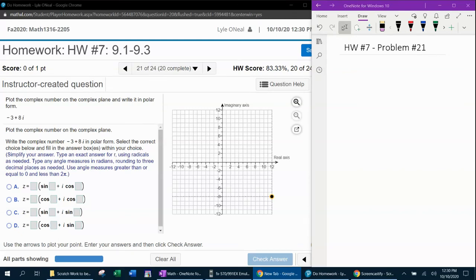Question number 21 from our 1316 homework number seven in MyLabMath. They want us to plot the complex number in the complex plane and then write it in polar form. I'm going to read ahead to make sure I know my destination. When converting this into polar form, it says to type an exact answer for R, which means R cannot be a decimal. It's going to have to be probably a whole number, a fraction, or a simplest radical form. And then it says type an angle measure in radians rounded to three decimal places as needed. So the angle, if it doesn't come out to be a nice number, is going to have to be approximated. The radius has to be exact and the angle can be approximated.